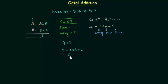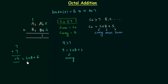Carry is always going to be 1 because we are adding two octal numbers and the maximum possible result is when we add 7 and 7. This gives us 14, and we can write 14 as 1 multiplied by 8 plus 6. So the carry is always going to be 1.